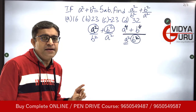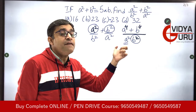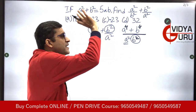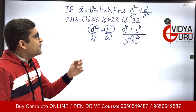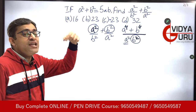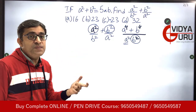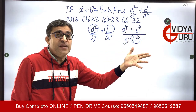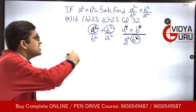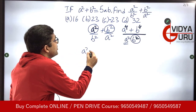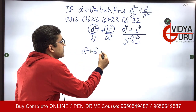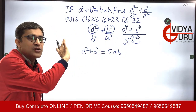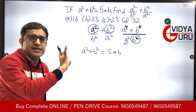Now we have a⁴ + b⁴ in the numerator, but we only have the value of a² + b². We need to find out the value of a⁴ + b⁴. The value given to us is a² + b² = 5ab, so we will square both sides to raise the power to 4.